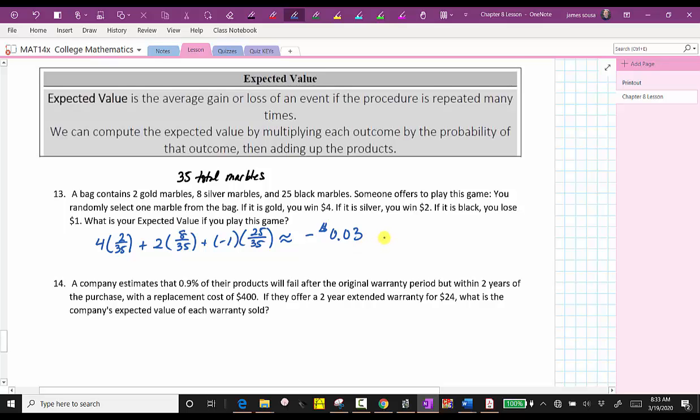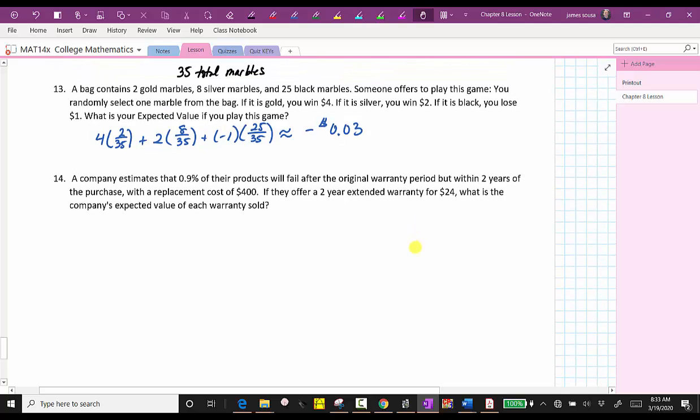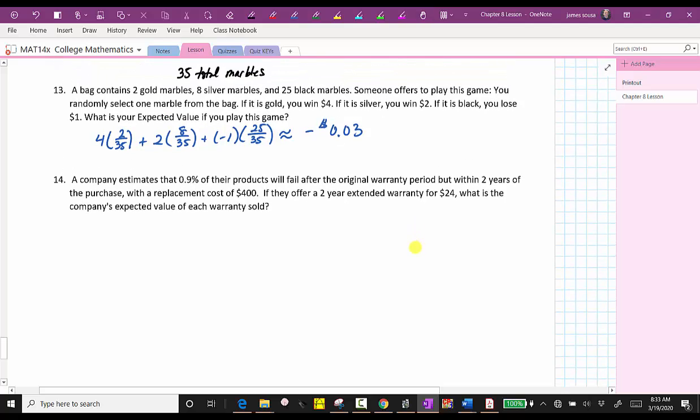And now let's take a look at number 14. The company estimates that 0.9% of their products will fail after the original warranty period, but within two years of the purchase, with a replacement cost of $400. If they offer a two year extended warranty for $24, what is the company's expected value of each warranty sold?